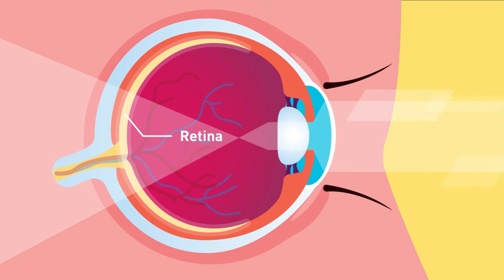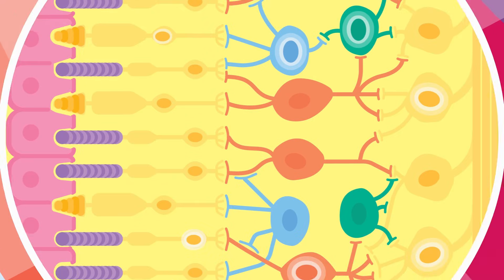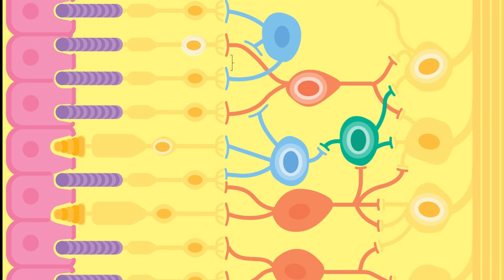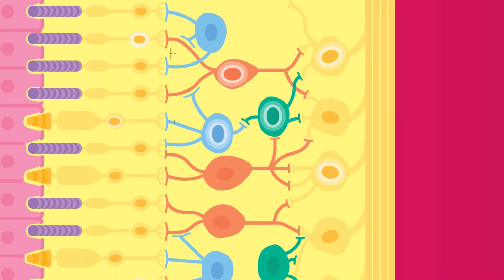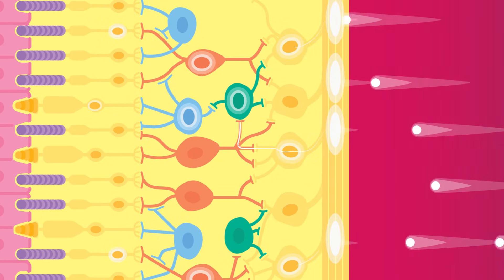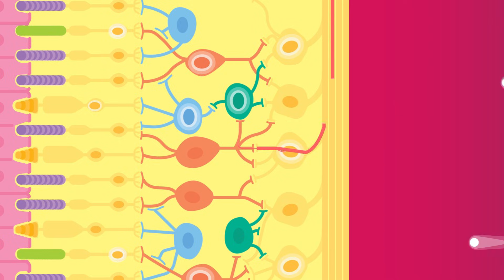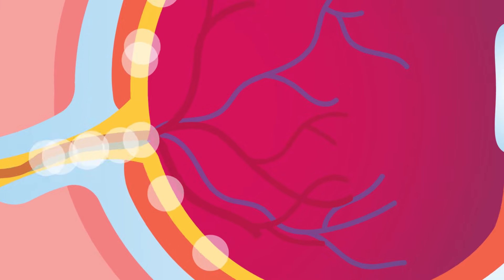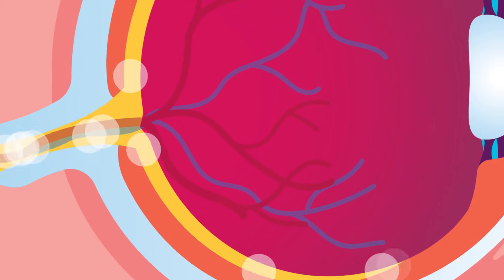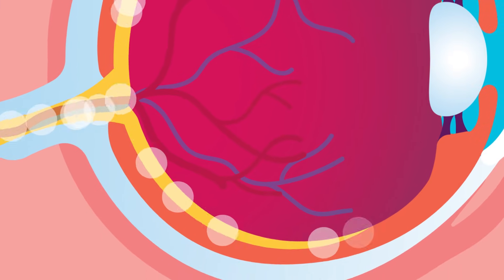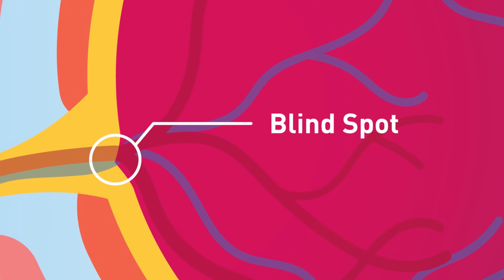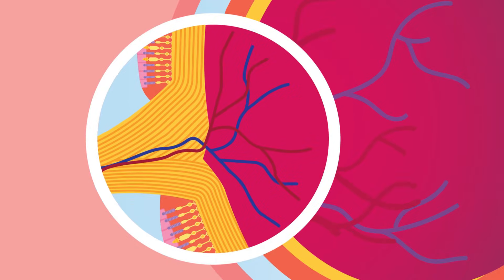The retina is the light-sensitive layer of the eye and bears photoreceptor cells called rods and cones. These cells convert electromagnetic waves from light energy to electrochemical signals that can be interpreted by the brain. These signals are transmitted via the optic nerve, which contains sensory nerves. The blind spot is the place where nerve fibres connecting rods and cones leave the eye and has no photoreceptor cells.